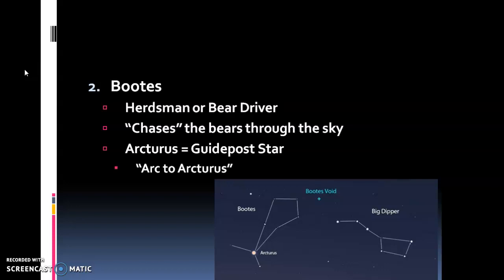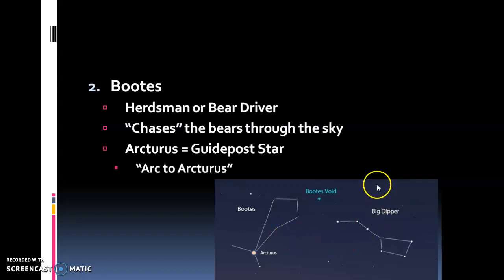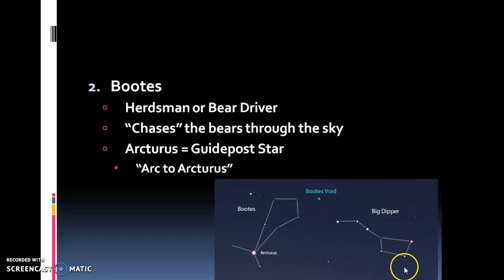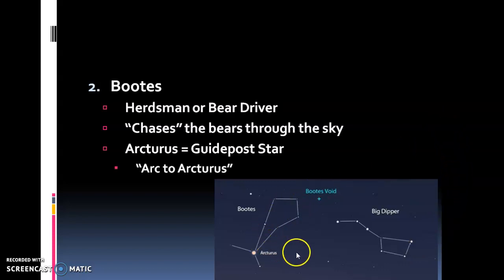The second spring constellation looks like boots but it's actually pronounced Boötes. Boötes represents a herdsman or a bear driver depending on your source — both work. In Greek mythology this was a herdsman who worked with livestock. I like the bear driver explanation: as the constellations all seem to rotate around the north star through the night, Boötes is following and chasing the bears — the Big and Little Dipper — through the sky.